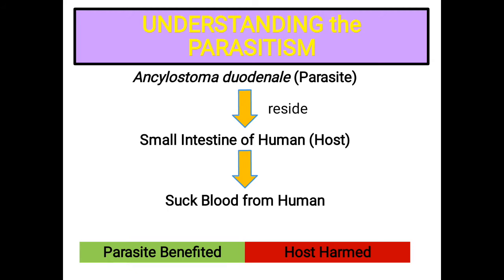In this association, the interaction between the individuals or species is a negative interaction. To know more about Ancylostoma duodenale, see the link given in the description box. In parasitism, parasite and host are always involved. So to understand parasitism, we must know about the parasites and the host. In this video, I have focused only on parasites. In the next video, I will discuss about the hosts.